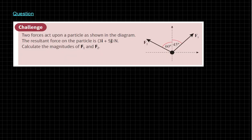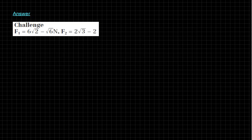Finally, the challenge question: going back to i-j notation but with less information than you might expect — form the force triangle and find the missing resultant force. Have a go, pause the video now, then check your answers for F1 and F2.